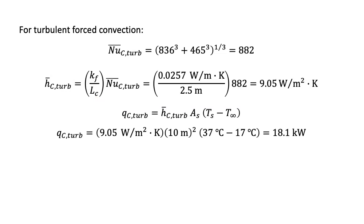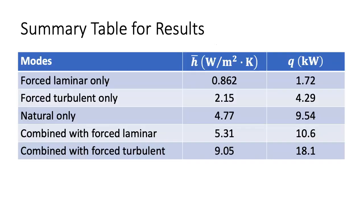For a forced turbulent flow boundary layer combined with natural convection, we get a Nusselt number of 882, a convection coefficient of 9.05 watts per meter squared kelvin, and a heat transfer rate of 18.1 kilowatts. Finally, a summary table presents all results for this example. As expected, the convection coefficient and heat transfer rate increase when both forced and natural convection are included.